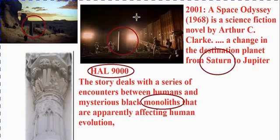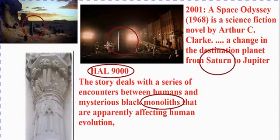In the movie it was Jupiter, but it was originally Saturn — they couldn't get the graphics right, so they went with Jupiter. So here we have Saturn, the moon, and the Earth. Or we can just draw a line: Saturn, to the moon, to the Earth. Just like I've been telling you guys all along.